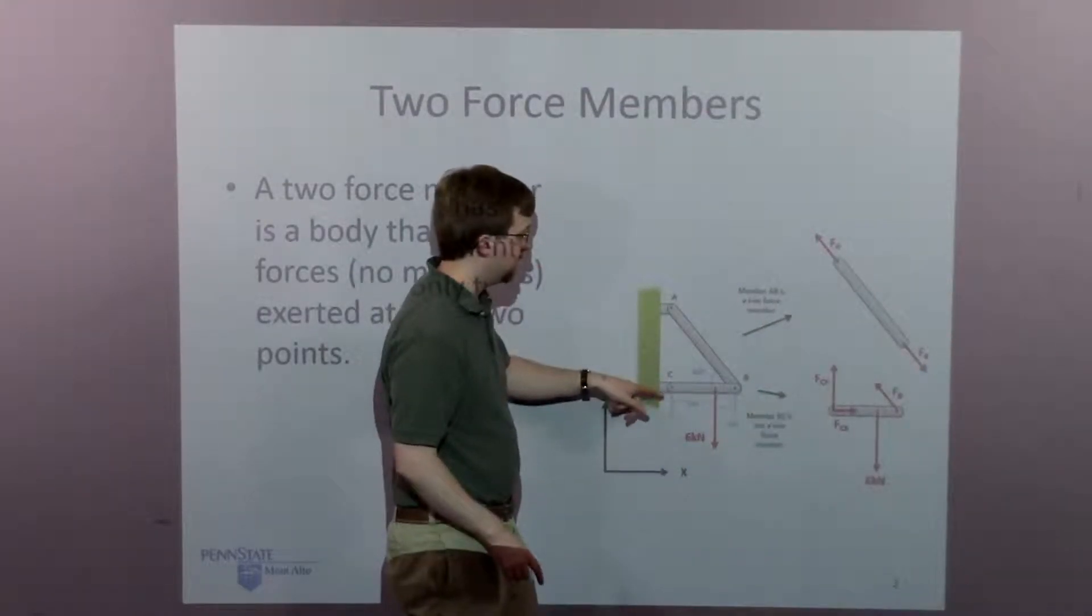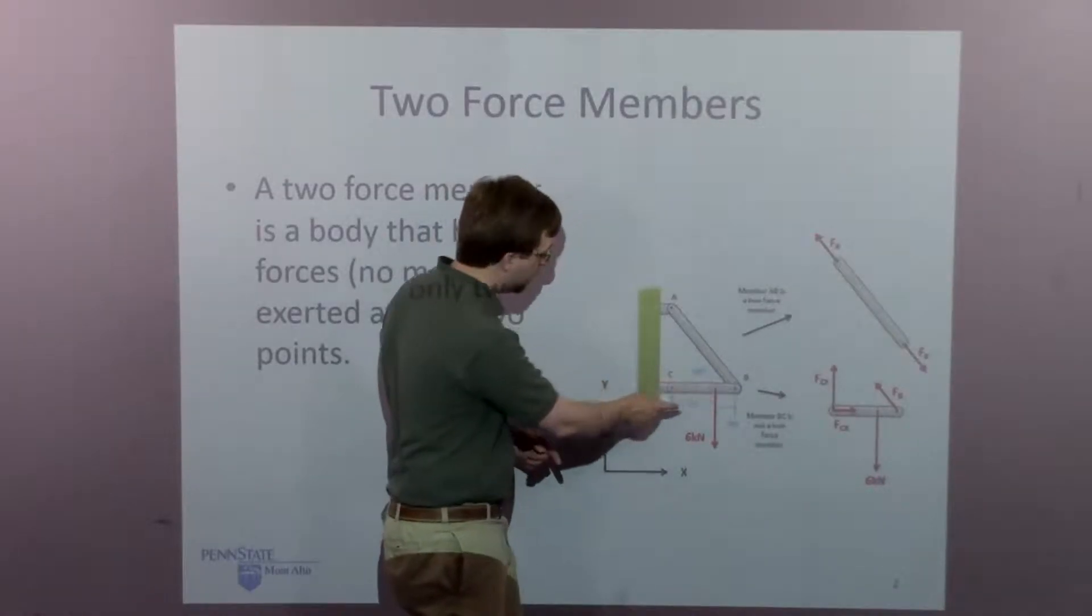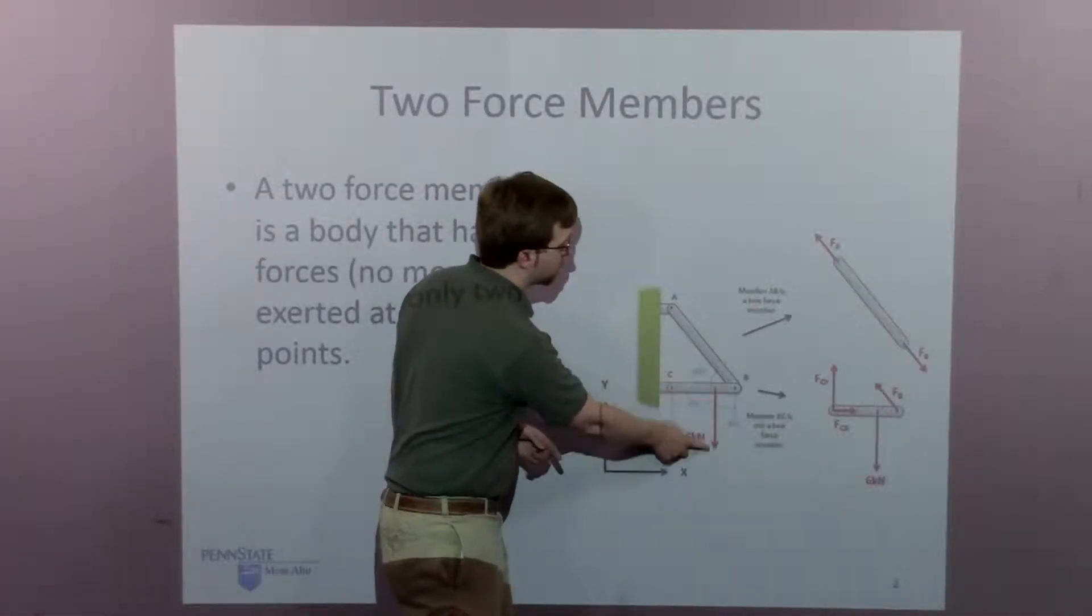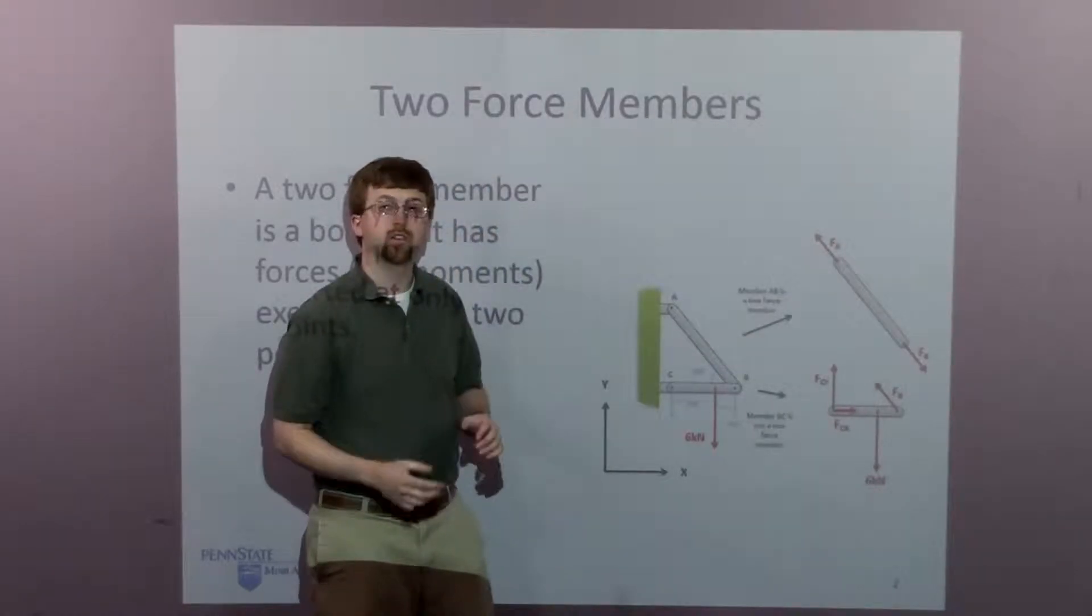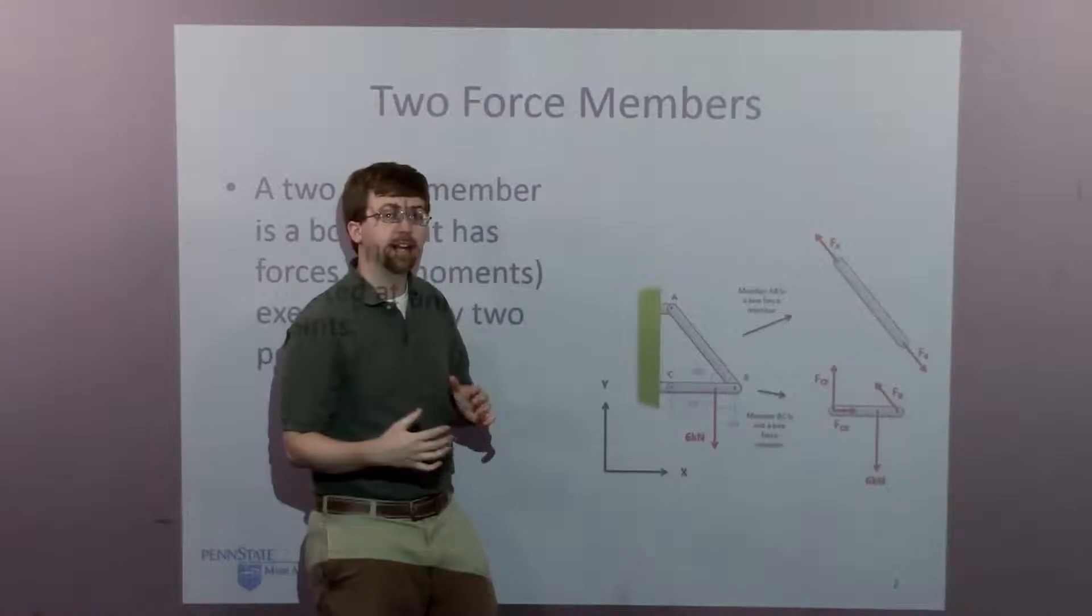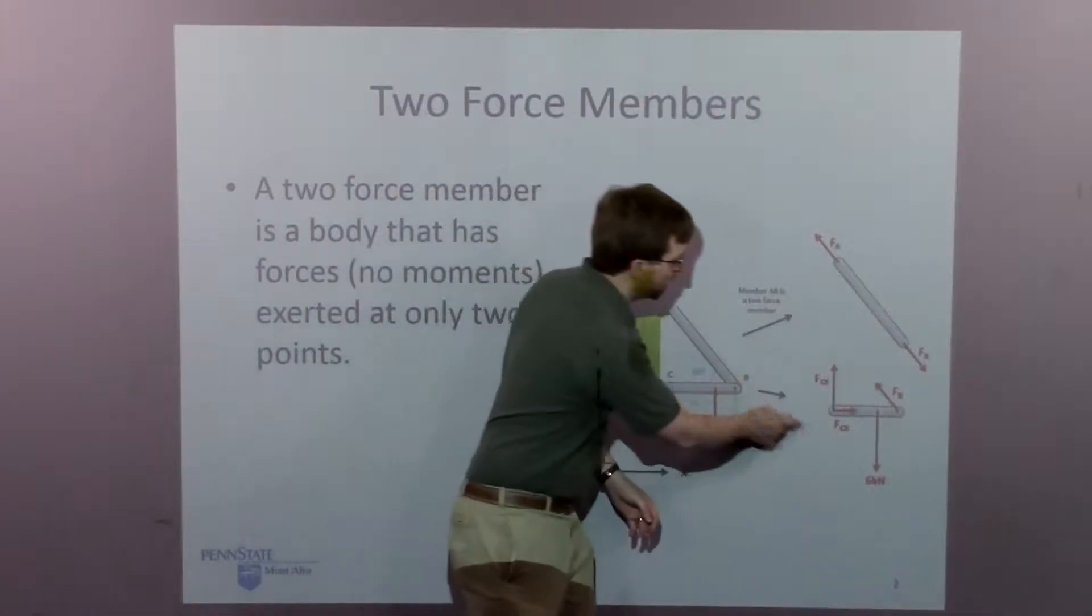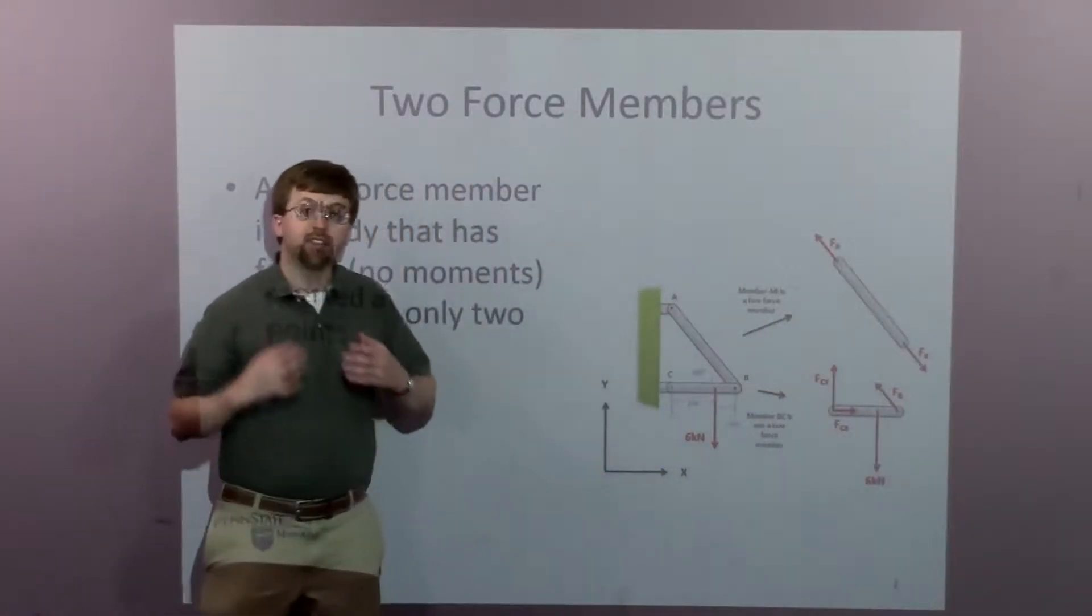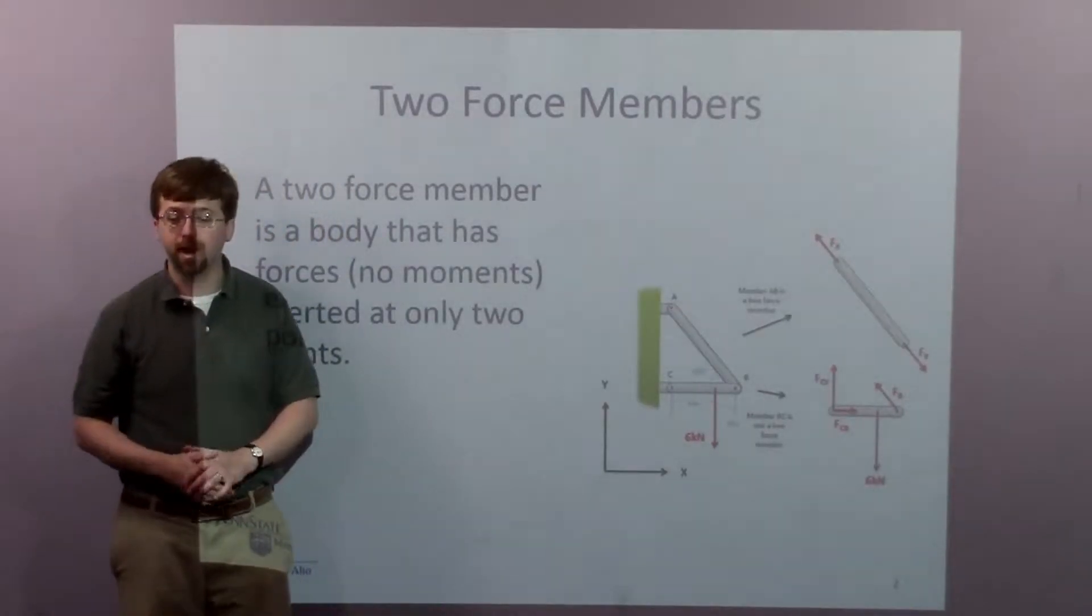BC, on the other hand, I've got reaction forces at B, reaction forces at C, and a separate force right here in the middle, so there's three points at which forces are exerted. Since I've got more than two, this bottom piece is not a two-force member. And that takes away some of the assumptions we can make.